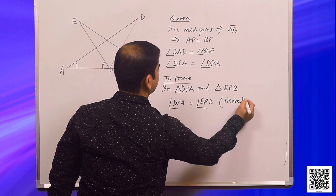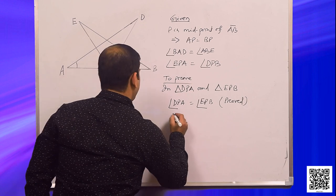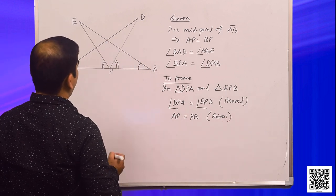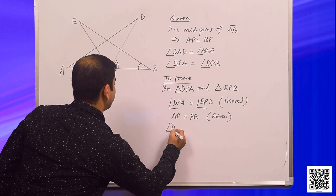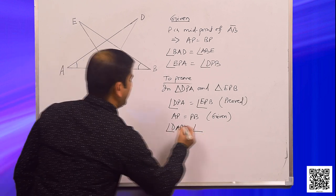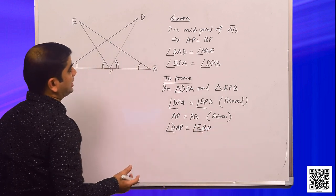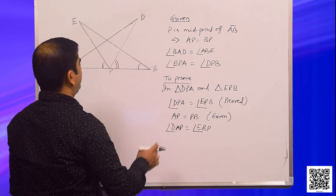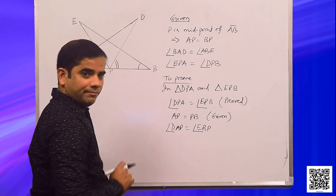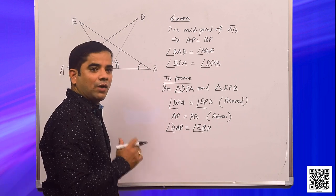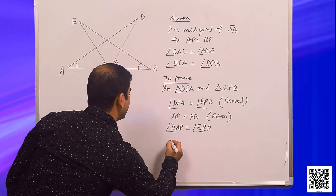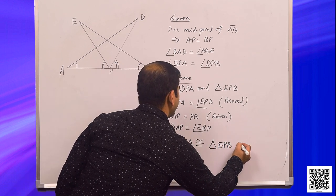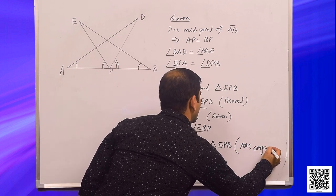Also, AP is equal to PB, and angle DAP is equal to angle EBP because it is given that angle BAD is equal to angle ABE, and P lies on side AB. So now we have two pairs of equal angles and a pair of equal sides.